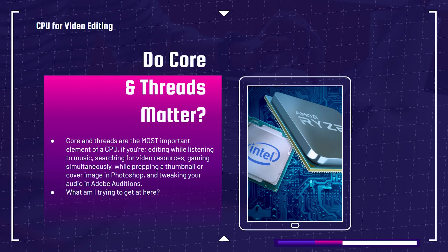Cores and threads are the most important element of a CPU if you are editing while listening to music, searching for video references on the internet, gaming simultaneously while preparing a thumbnail in Photoshop, and tweaking audio in Adobe Audition. Cores and threads are very important for multitasking. Most programs including Premiere Pro, DaVinci Resolve, and After Effects are not going to highly benefit from a multi-core processor. Overall, single core performance is where you're going to see a processor thrive, and multi-core performance will help in multitasking situations.